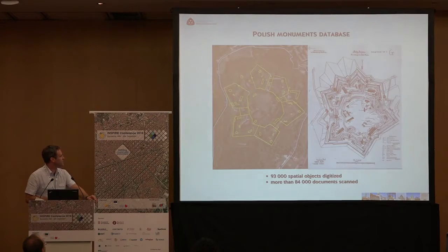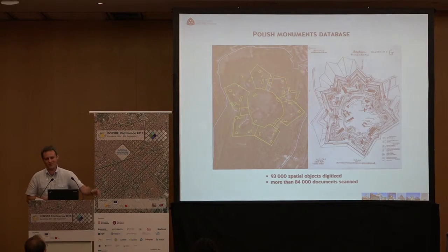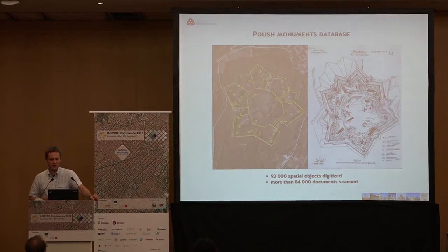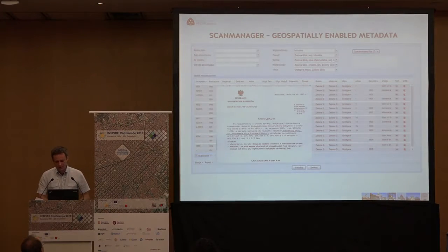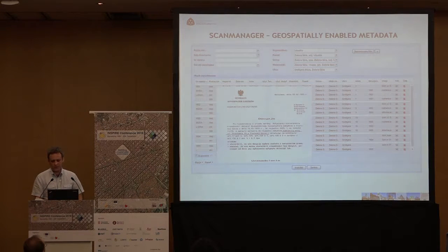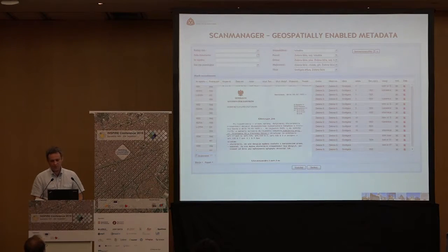In total to date, the historical monuments database contains information about 93,000 structures, as well as over 84,000 scanned document entries to the register of monuments defining the protection of these structures. The work on digitalising the register of monuments began quite late, in 2013. It required building an entire infrastructure from scratch — both technical, for collecting digital data, and the database management system. The first issue was finding an effective method of converting the analog documentation into a digital form.